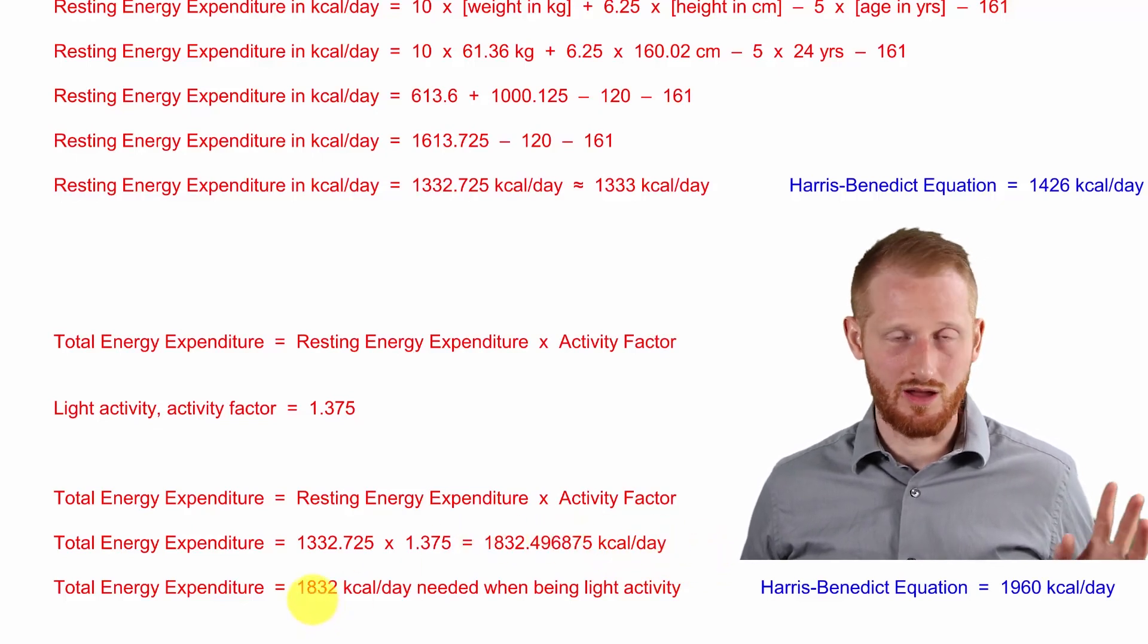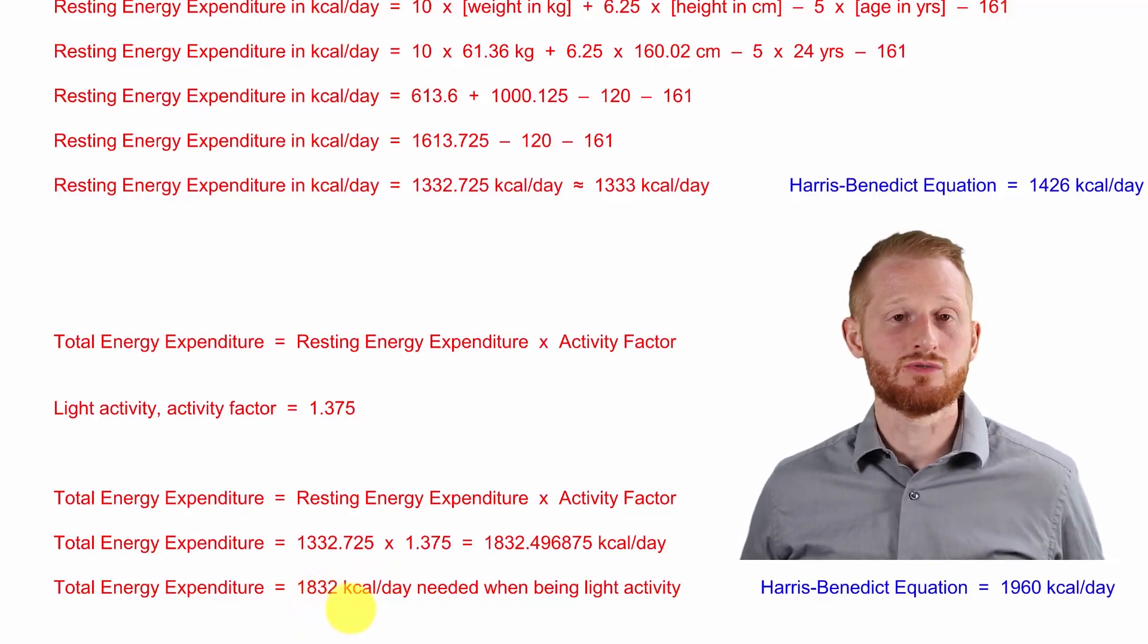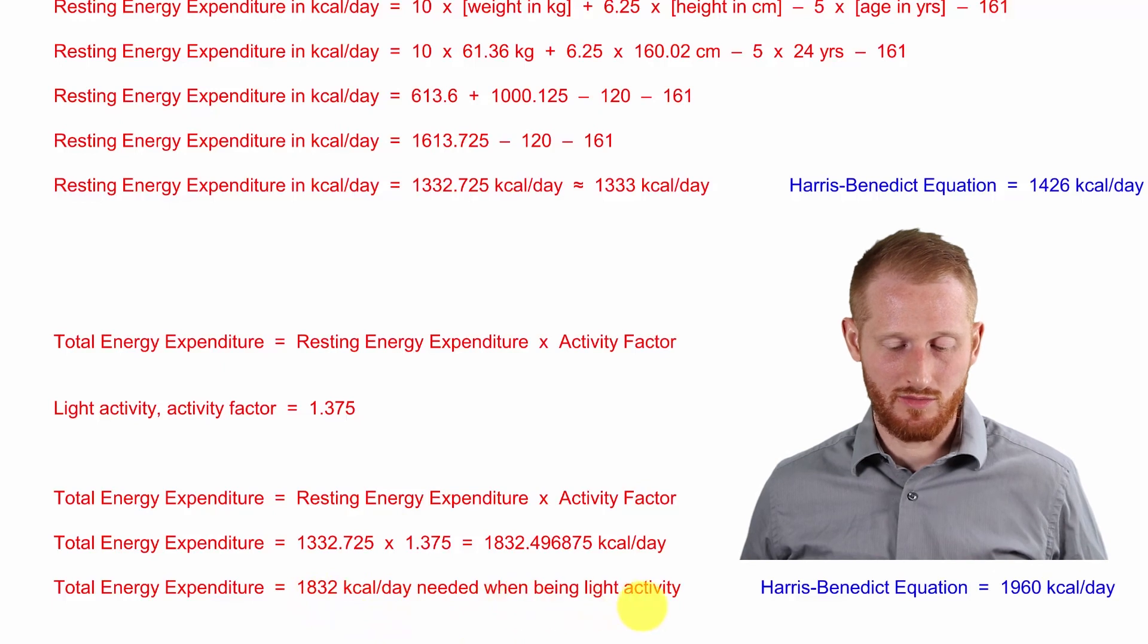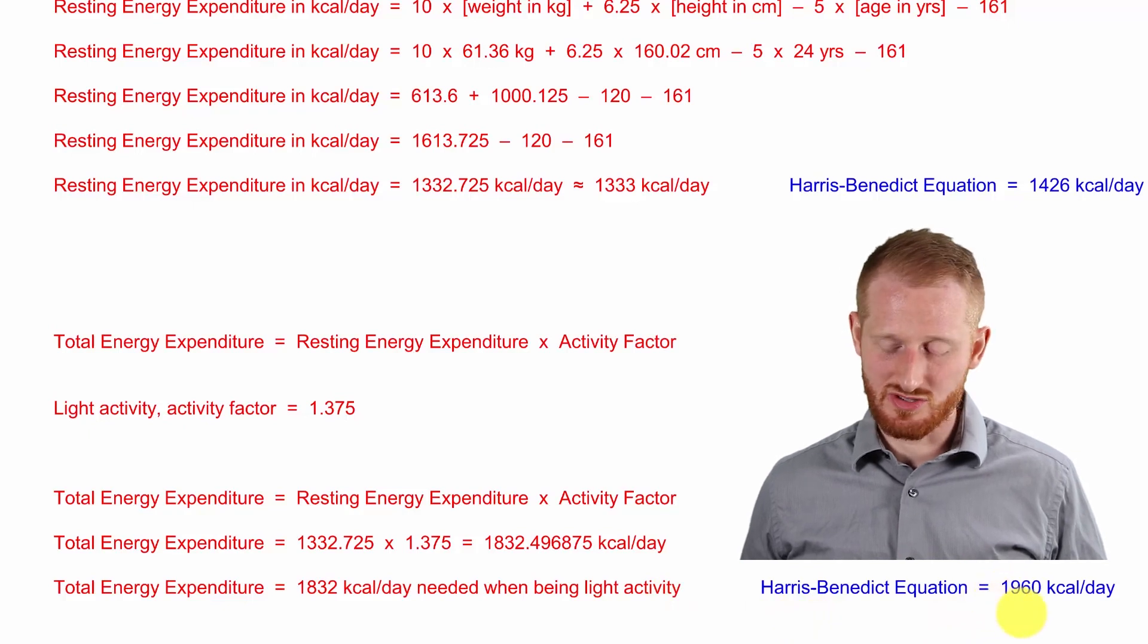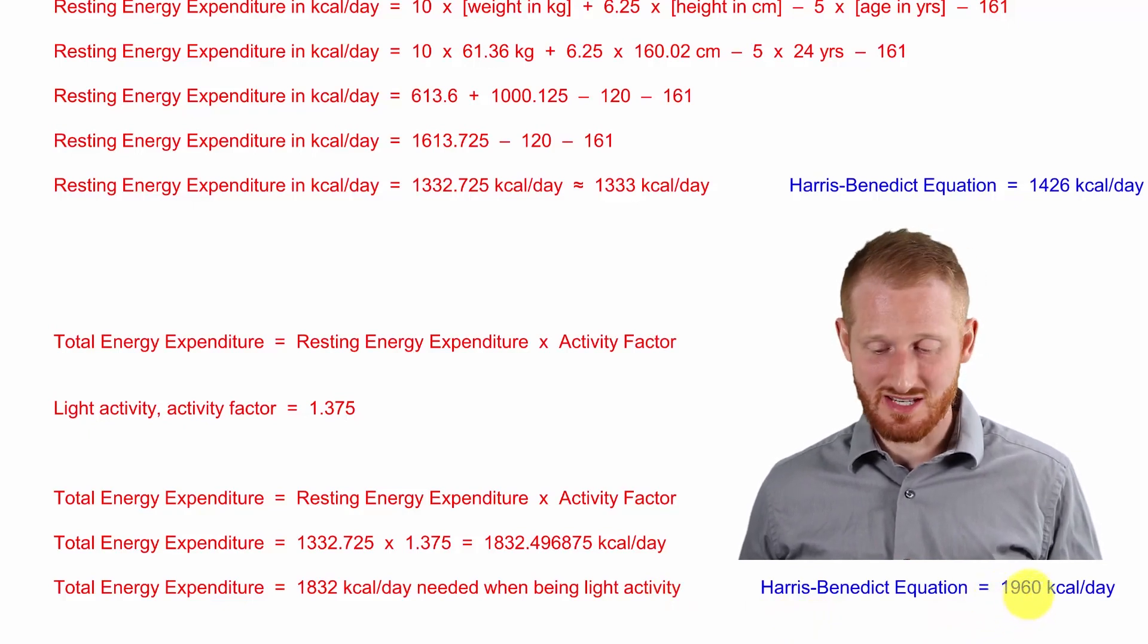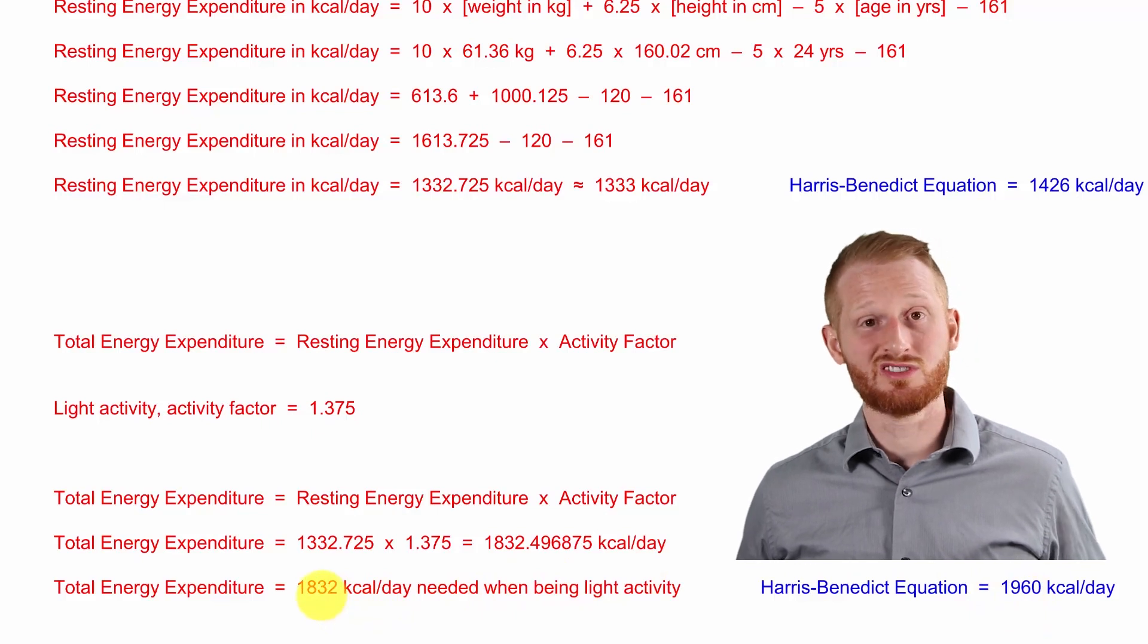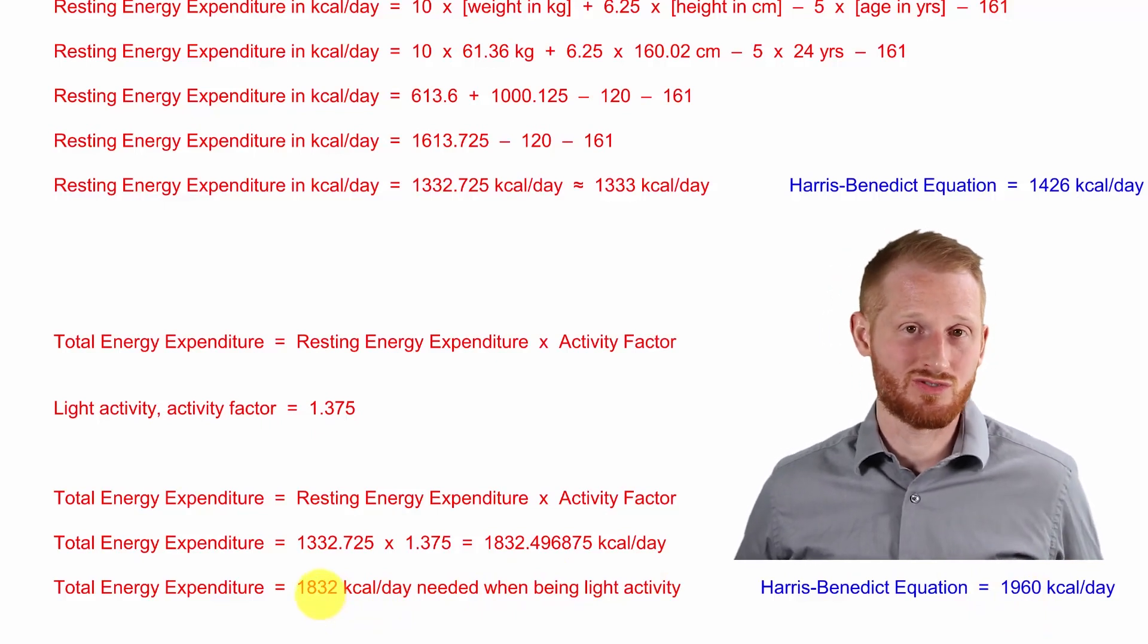Let's round that off to a nice round number, 1,832 kcals per day when having a light level of activity. Again, comparing this to the Harris-Bennett equation, which gives us 1,960 kcals per day, the 1,832 kcals per day using the Mifflin-St. George equation is a little bit less than that.